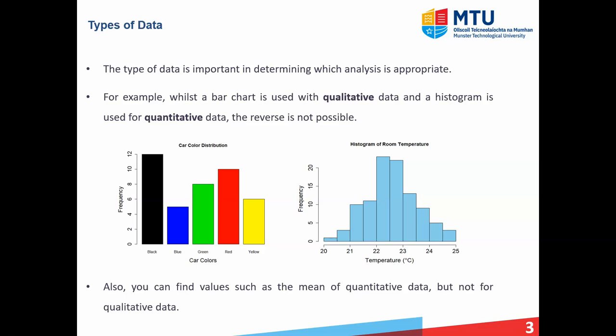Now secondly, the type of data is going to be important in relation to the type of numerical measures that you can use. For example, if you consider the mean, which is the sum of the data points divided by the number of them, we cannot use that with qualitative data. You can't get the mean of black, blue, green, but you can get the mean of temperature, a set of temperature points. So types of data is going to determine which type of analysis that you can use.